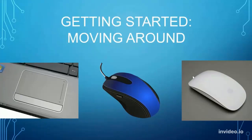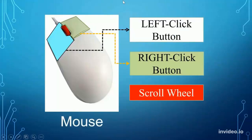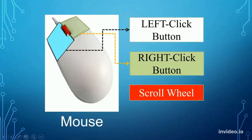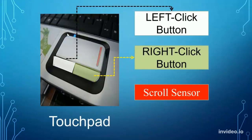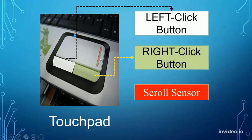Getting started moving around — this is using the trackpad and mice. The left click is your action button. The right click is usually a menu button. And then we have the scroll wheel which is used to scroll up and down on a page. Same thing on the trackpad: left click right here, right click right here, and then the scroll going up and down on the page.